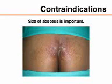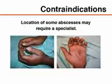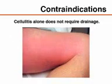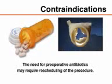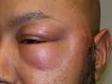Extremely large or deep abscesses in areas difficult to anesthetize may be more appropriate to treat in a formal operating room setting. Abscesses of the palms, soles, or nasolabial folds can be associated with complications and may require consultation with an appropriate specialist. Incision and drainage is not indicated for cutaneous cellulitis without an underlying abscess. The need for preoperative antibiotics for conditions such as abnormal or artificial heart valves may require reconsideration of the timing for the procedure. Input from an appropriate specialist may be important for areas with cosmetic concerns because of expected scar formation after abscess drainage.